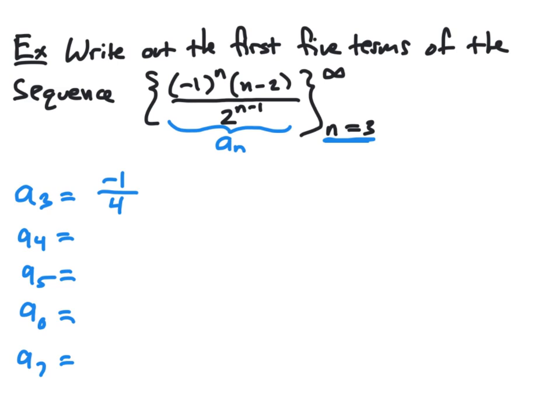For the rest of these, we do exactly the same thing. When n is 4, we get negative 1 to the fourth power, which is 1, multiplied by 4 minus 2, which is 2. So 1 times 2 is 2. And in the denominator, we get 2 raised to the 4 minus 1, which is 2 cubed, or 8. And 2 eighth, we can simplify as 1 fourth.